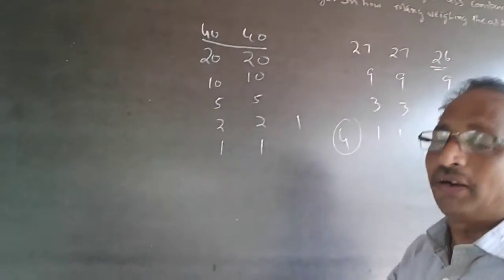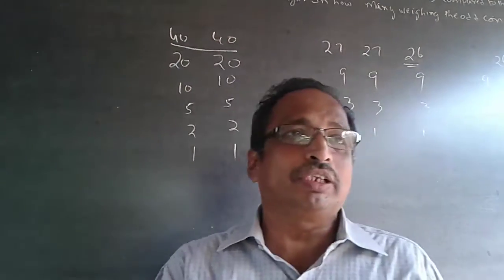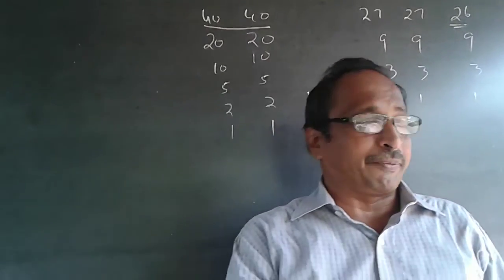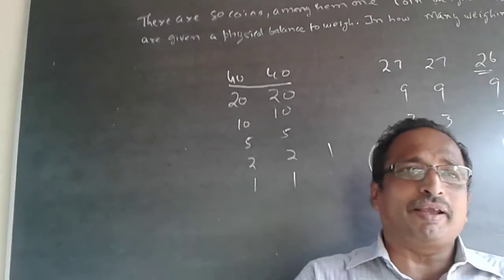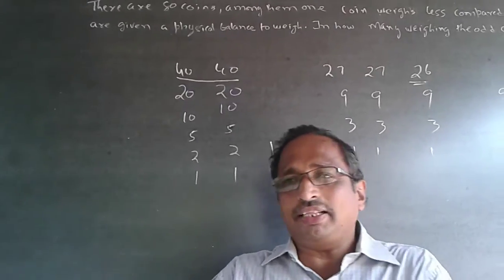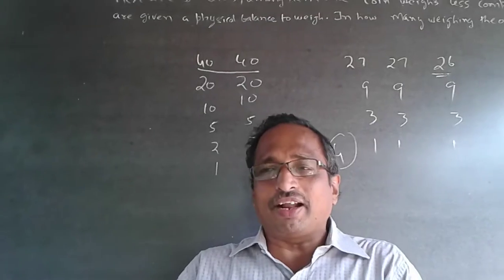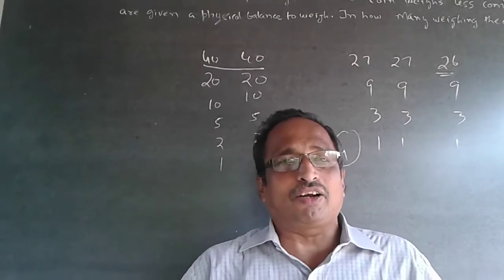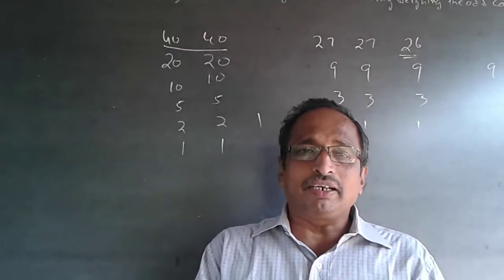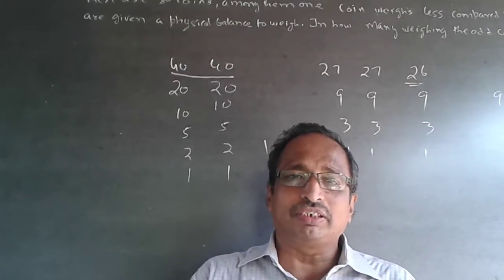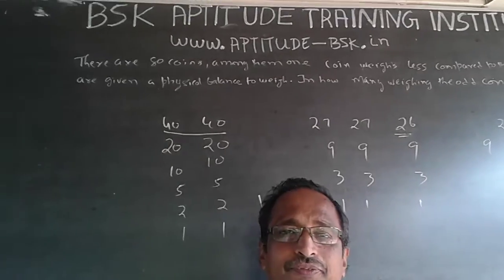It is based on the power of 3. Anything up to 27 coins, your answer will be 4. Anything up to 81 coins, your answer will be 5. And so on. Please subscribe to my channel — I will be adding questions every now and then.